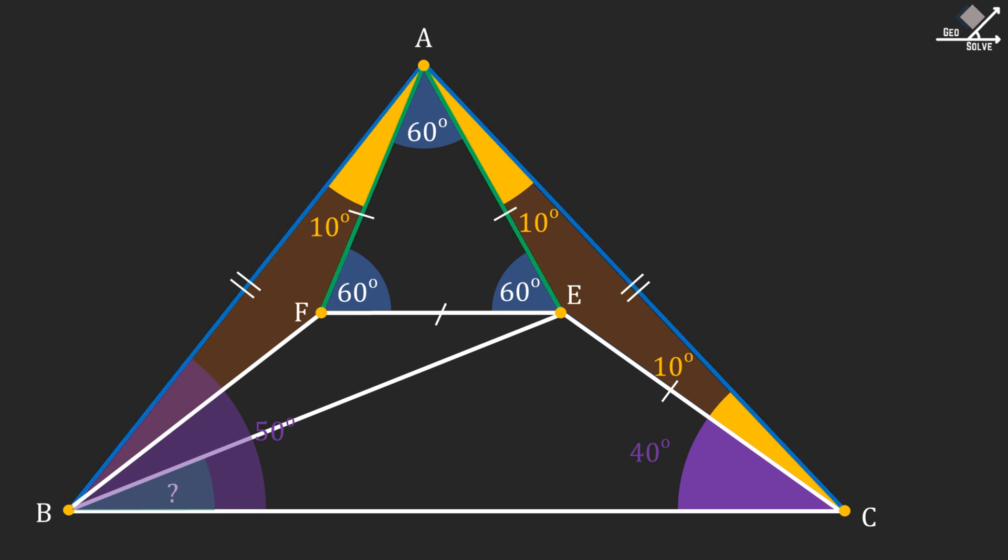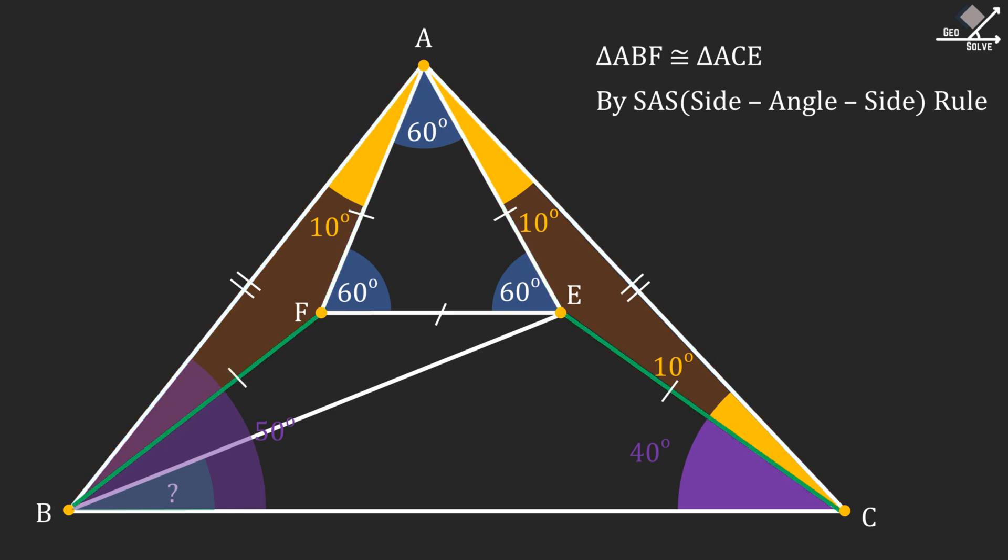These triangles have two of their sides, and the angle between those sides are equal. From here, we conclude that these two triangles are congruent by SAS rule. So the remaining sides, namely the green lines, must also be equal.